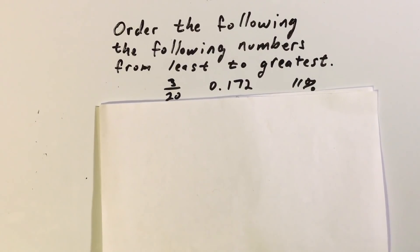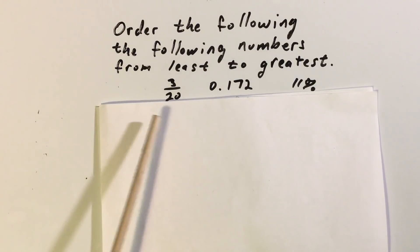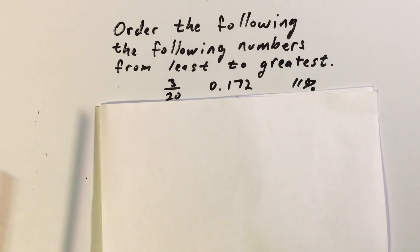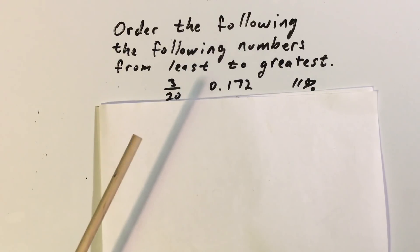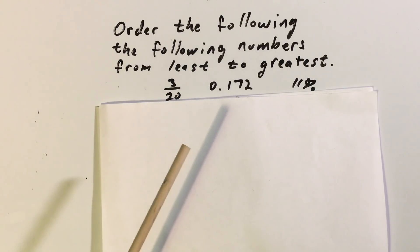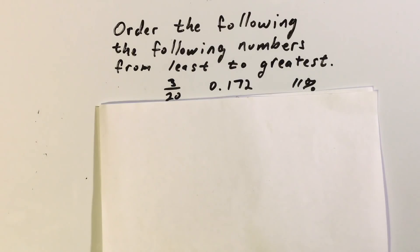Today we are going to order the following numbers from least to greatest. The problem is that we have a mixture of different types of numbers — we have a fraction, a decimal, and a percent. So we have three-twentieths, a hundred seventy-two thousandths, and eleven percent. We need to decide whether we're going to turn all of them into fractions, decimals, or percents.